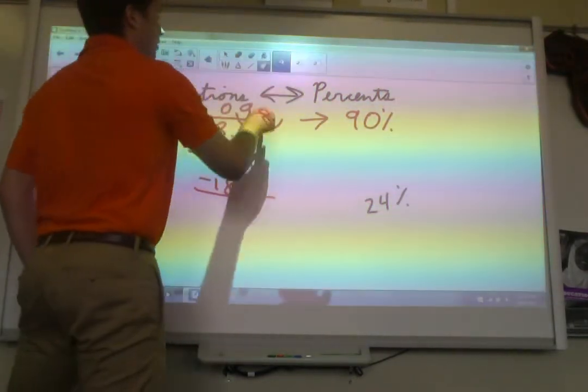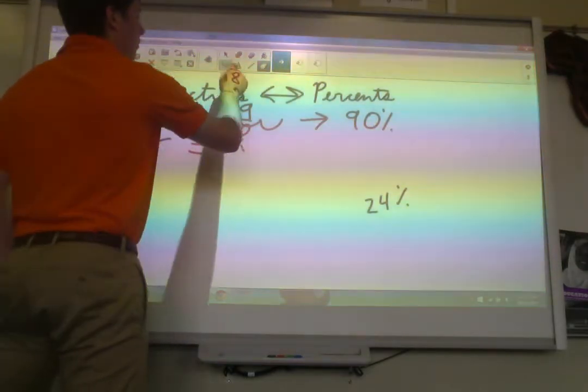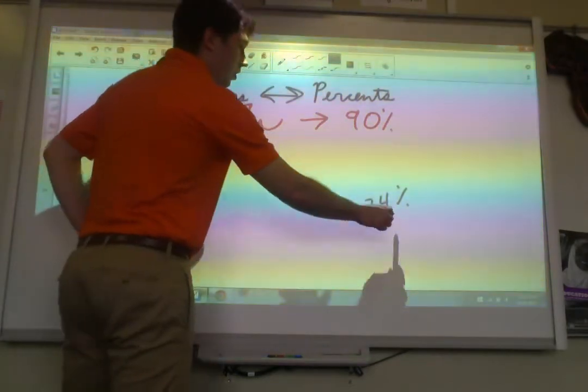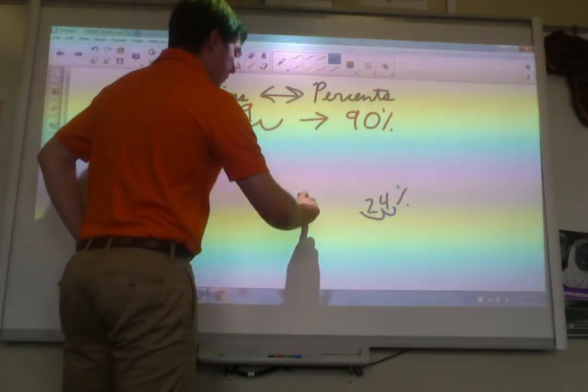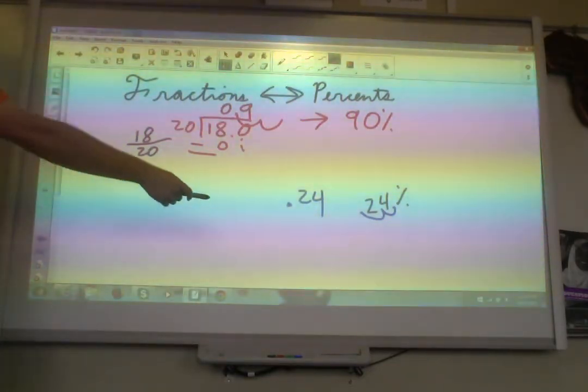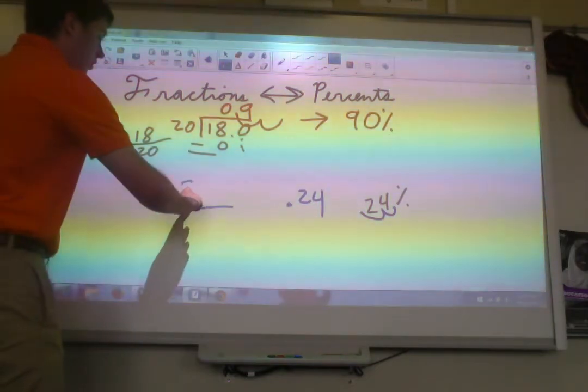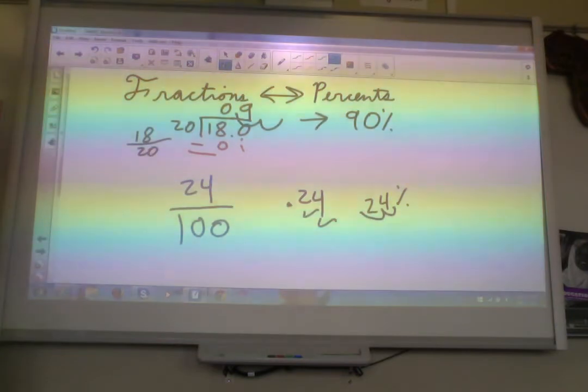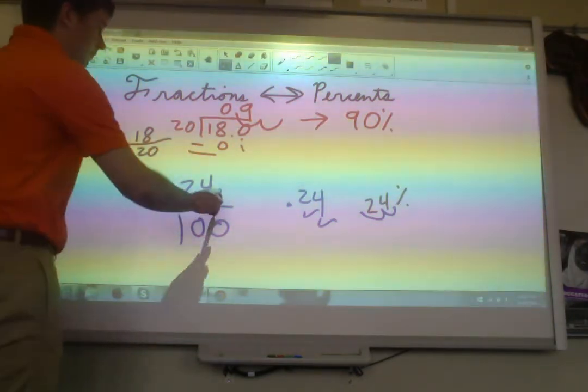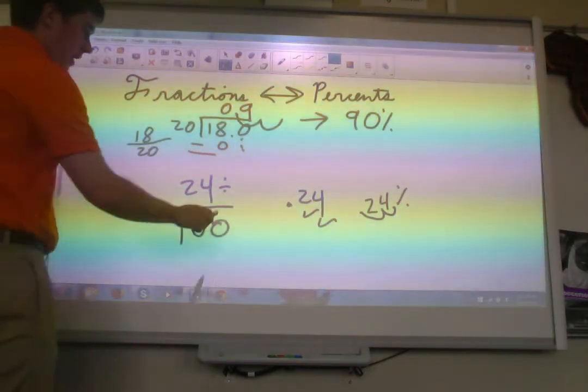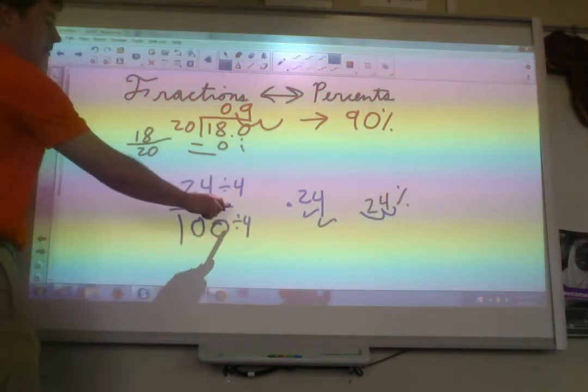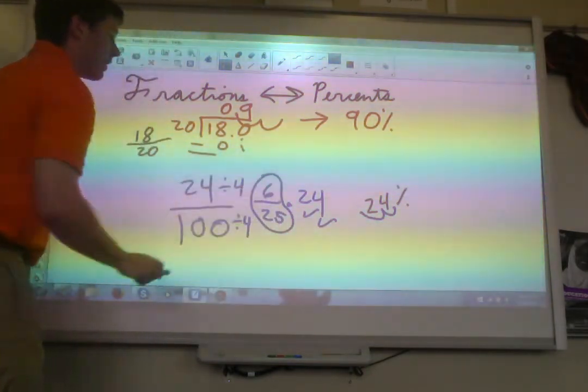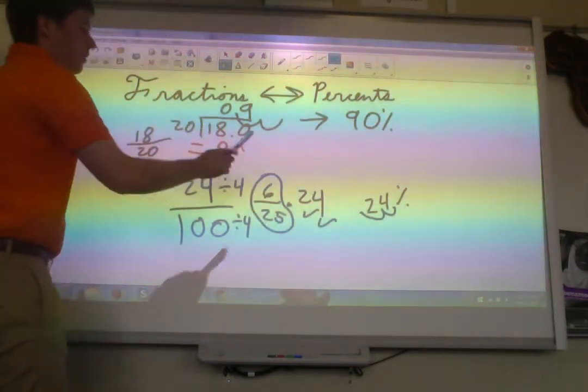All right. Very last example here. Let me erase a little bit of this, give us some room. 24%. We need to turn it back into a fraction. Well, we just need to do the reverse. We'll turn it into a decimal first. Move that decimal twice, and we've got 0.24. How do we turn a decimal into a fraction? We've got to put our fraction bar. 2, 4 on top. 1 on bottom, followed by 2 zeros. And we've got 24 over 100. Now we just need to simplify. Let's see. We're going to be dividing this by 4 and by 4. 24 divided by 4 is 6. 100 divided by 4 is 25. And there is our final answer, 6 over 25. So 24% ends up being 6 over 25 as a fraction.